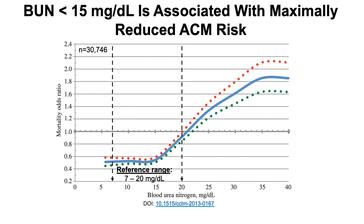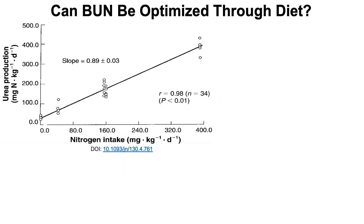So the lowest risk for all-cause mortality is for BUN levels of 15 or less. When considering both the aging data and the all-cause mortality data, values less than 15 — not the reference range of 7 to 20 — may be optimal for health. So can BUN be optimized through diet? Is it malleable? Can it even be altered?